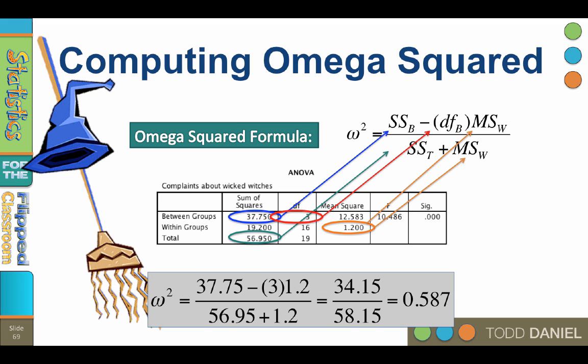This example uses data from the previous video about the Wizard of Oz, but you can use the same procedure with any one-way ANOVA. In this case, omega squared equals .587. That means that 58.7% of the variability in complaints about wicked witches is explained by the region in which the munchkins live.